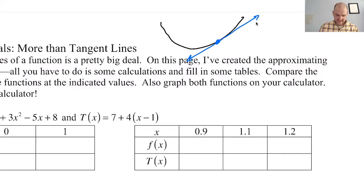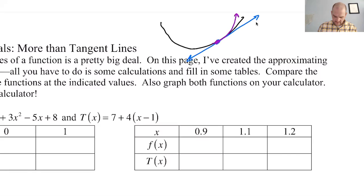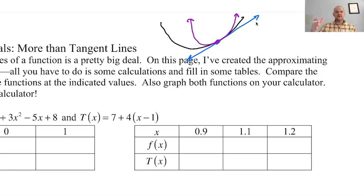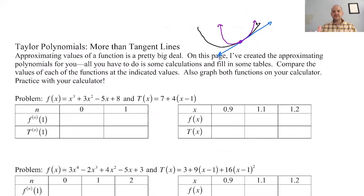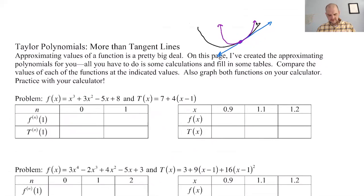What if instead of just a tangent line, we had a quadratic that fit the function? A quadratic might do better for a little bit longer. What if we had a cubic - maybe it'd be better for even longer? A fourth degree - could it be better for longer still? That's what we're going to talk about here: can we do better than tangent lines? I think we can. I'm going to give them to you so we can get a sense of what's happening and whether they're good.